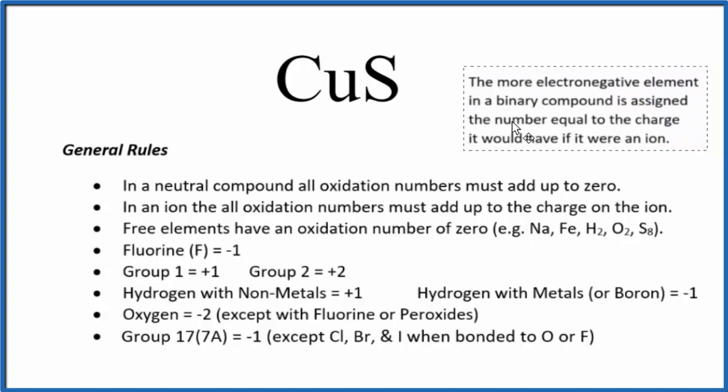The more electronegative element in this binary compound is going to get the oxidation number that equals its charge. We know that sulfur is in group 16 or 6a in the periodic table, so it's going to have an ionic charge of 2 minus.